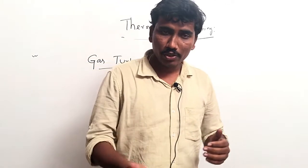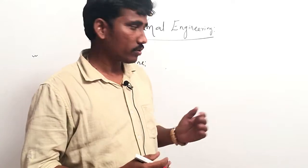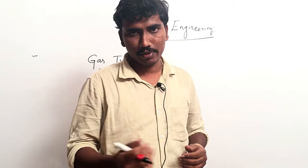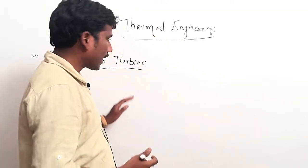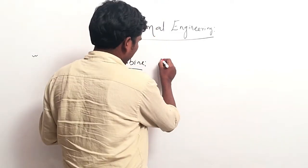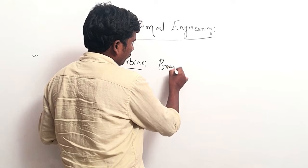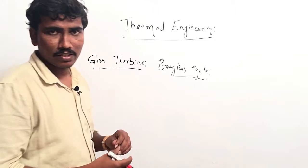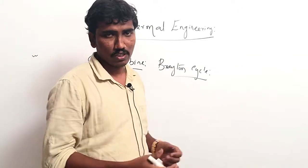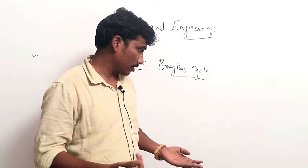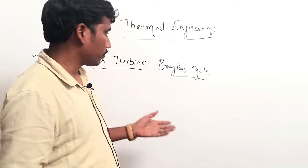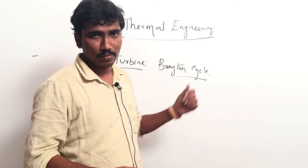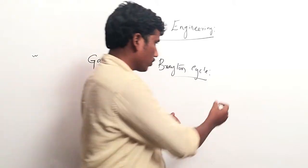I am going to tell you how the gas turbine will produce power — electric power. First, this gas turbine works on the Brayton cycle. We know there are many cycles: for IC engines we have cycles like the Otto cycle and diesel cycle. For the gas turbine, one more cycle is there — the Brayton cycle, also known as the Joule cycle.